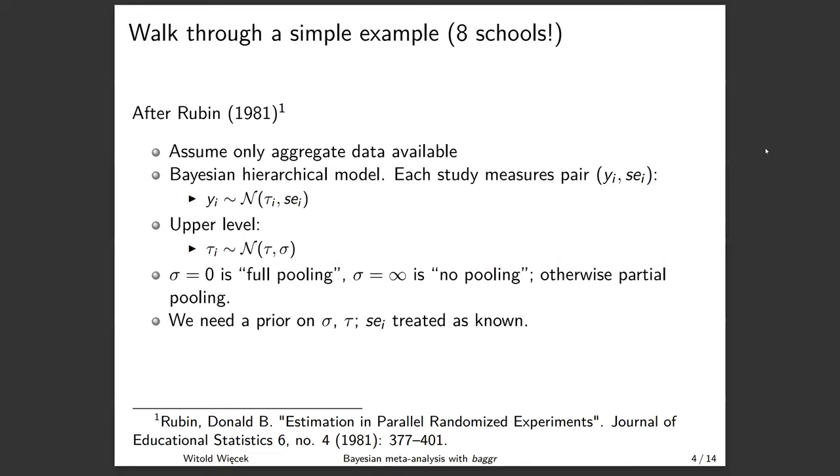I will use a very simple one. Bagger also has methods for working with binary event data or quantiles or zero inflated data, although some of those things are still work in progress. But I want to use a canonical Bayesian example from Donald Rubin's 1981 paper on SAT improvement in eight schools.